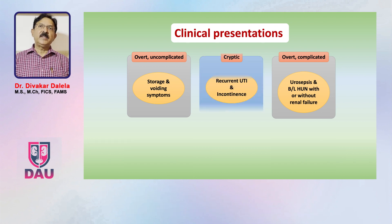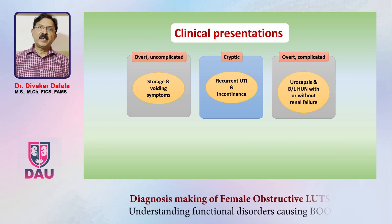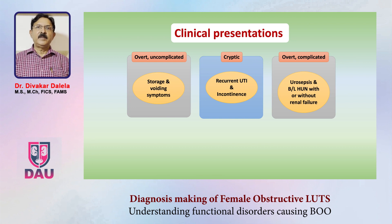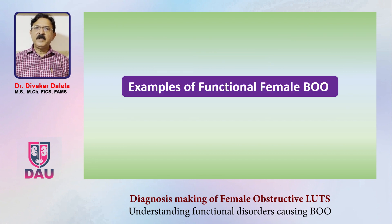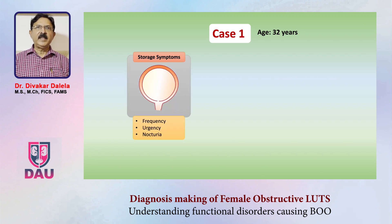Equally common is what I call a cryptic presentation of functional bladder outflow obstruction in females, where these females present with recurrent urinary infection or incontinence. So if you have patients presenting to you in any of these three formats you have to make a diagnosis. Let me give you some examples first of all of functional female bladder outflow obstruction.